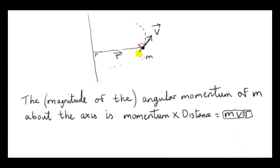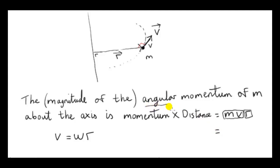The particle is moving in circular motion, and we can relate the speed v of the particle — that's the magnitude of the velocity — to the angular velocity omega. From circular motion, we know that the speed v of a particle moving uniformly on a circle is the angular speed omega times the radius r. So the magnitude of the angular momentum is m times omega r times r, giving us m times omega r squared.